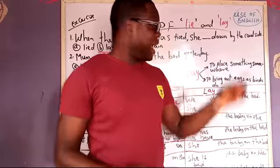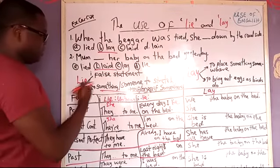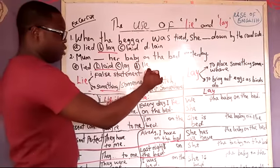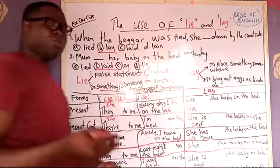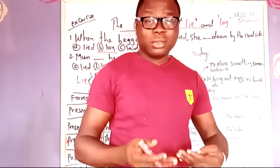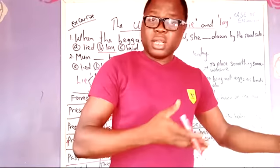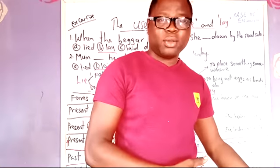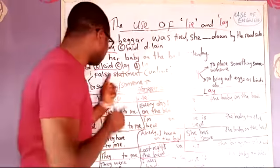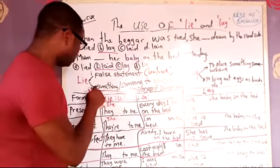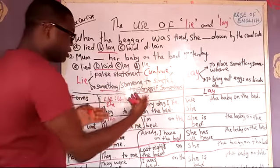So, lie. Lie has two meanings. The first meaning: untrue — a false or untrue statement. The second meaning: when you stretch yourself somewhere, or something stretches itself somewhere. We say lie.